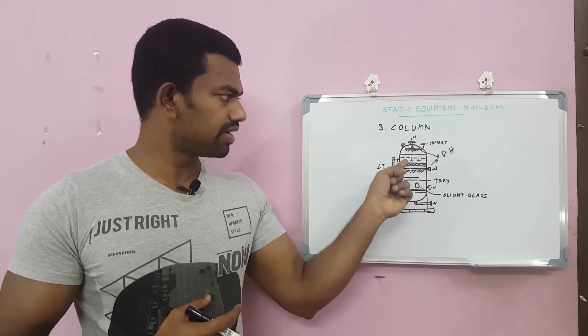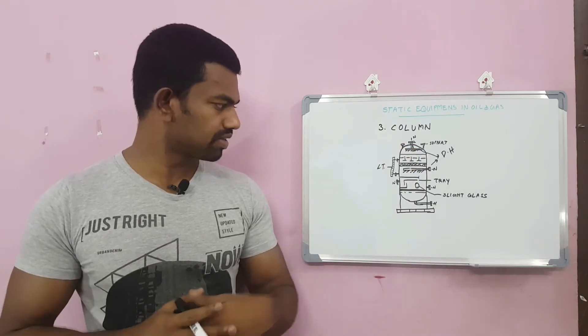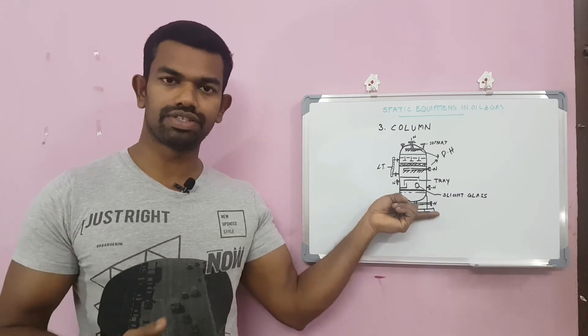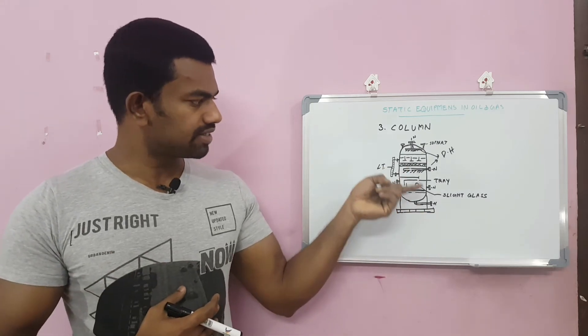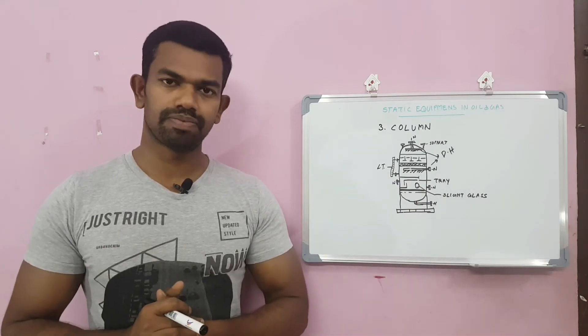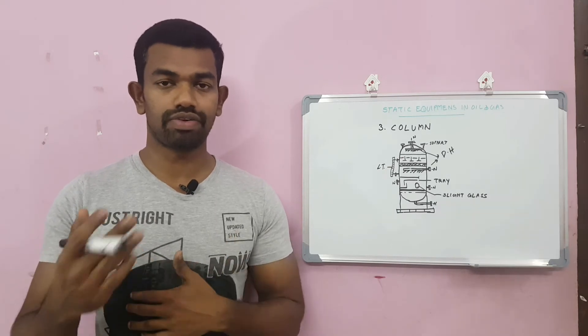These are the nozzles, cable trays, and distribution headers. This is support for the platform or accessories. This is skirt supporting. This is the resting area on the foundation or structure. This is a typical column. This is only a sample because based on the process it will be different, many different kinds of columns.